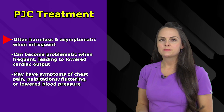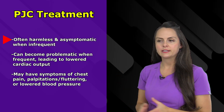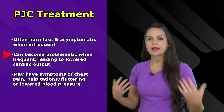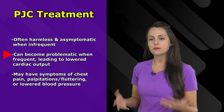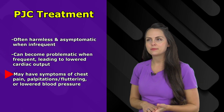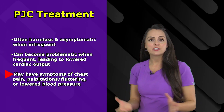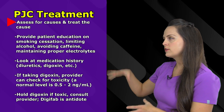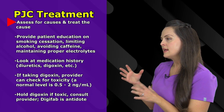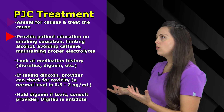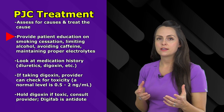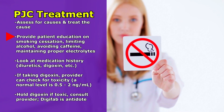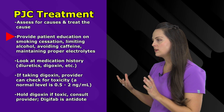PJCs are often harmless because patients will have them randomly and infrequently, so they're asymptomatic. They become a problem when occurring frequently, because it could lead to lower cardiac output where the body isn't being perfused with enough blood flow. That can lead to symptoms like chest pain, palpitations, and fluttering in the chest, and if severe enough, it could lower blood pressure. When that starts to happen, we look for potential causes using the JUNCTION mnemonic. We also play a role educating patients on modifiable factors like smoking cessation, limiting alcohol intake, and avoiding caffeine.